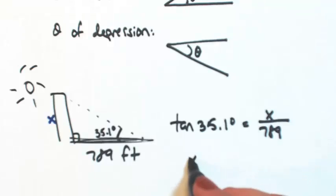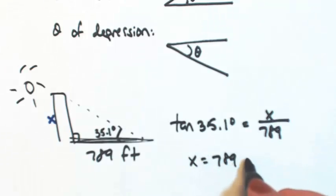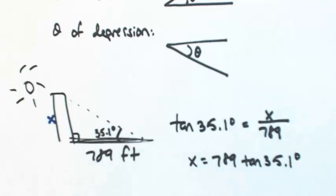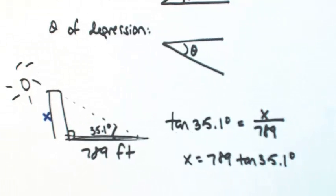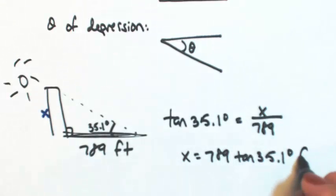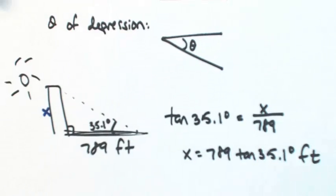So solving for x, and we had the shadow being in feet, so this would also be in feet. Now this is our exact answer.